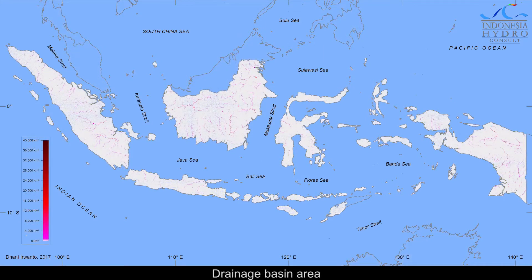The drainage basin is a region on the ground where the rainwater falling on it affects the flow in a specific point on the stream. The wider the area of the drainage basin, the higher the rate of flow of water at a specific point on the stream. This map shows the drainage basin area for every point of the streams. Drainage basin area for streams located on flat planes are ignored.